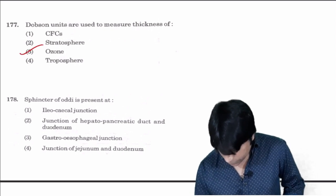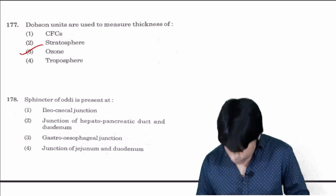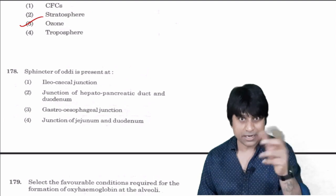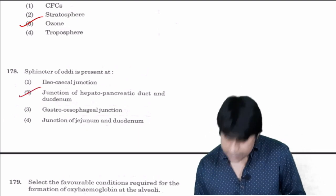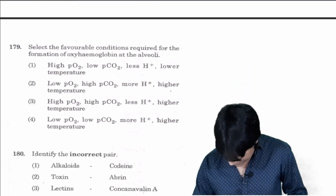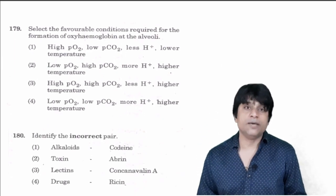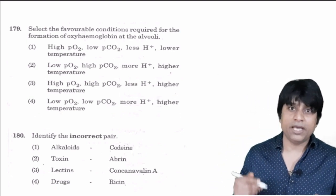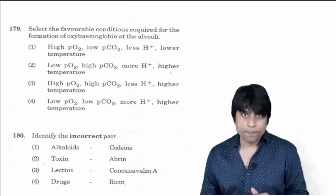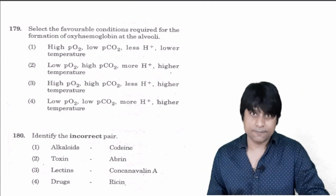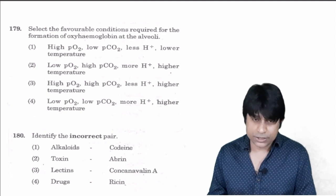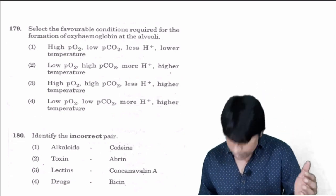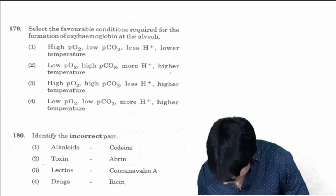Dobson units are used to measure the thickness of ozone in the stratosphere. Sphincter of Oddi is nothing but hepatopancreatic duct which opens into the duodenum of the small intestine. Select the favorable condition for formation of oxyhemoglobin: Partial pressure of oxygen should be very high, carbon dioxide should be low, H+ and temperature should be very less. All these conditions can be seen at the respiratory surface called alveoli. Answer is one.